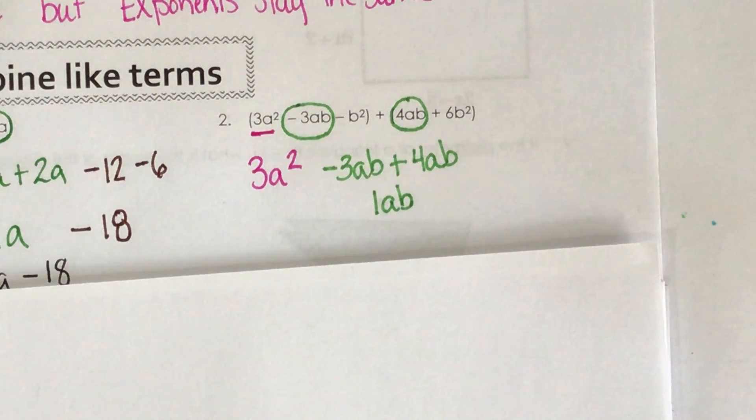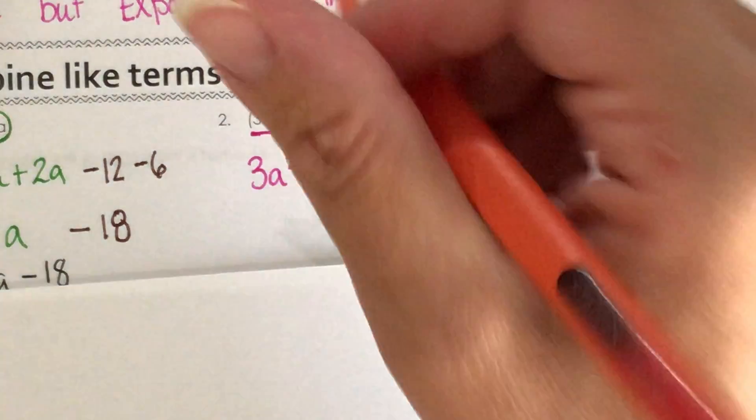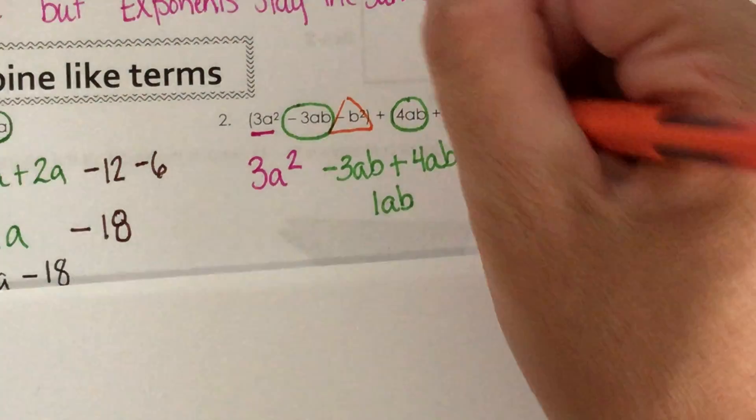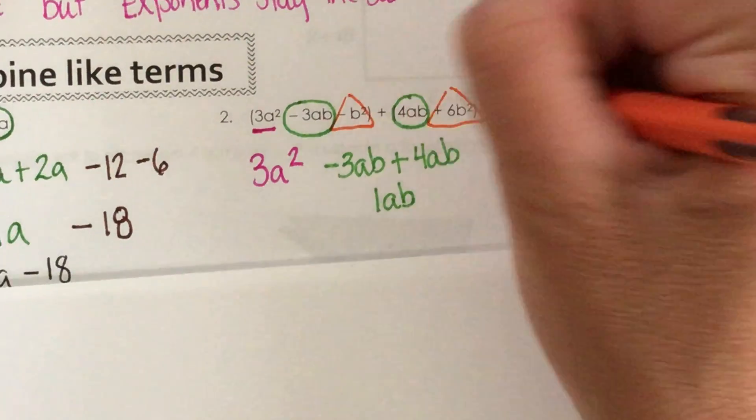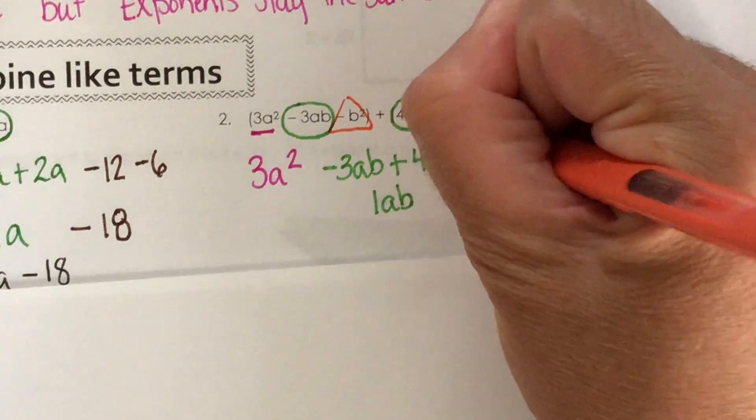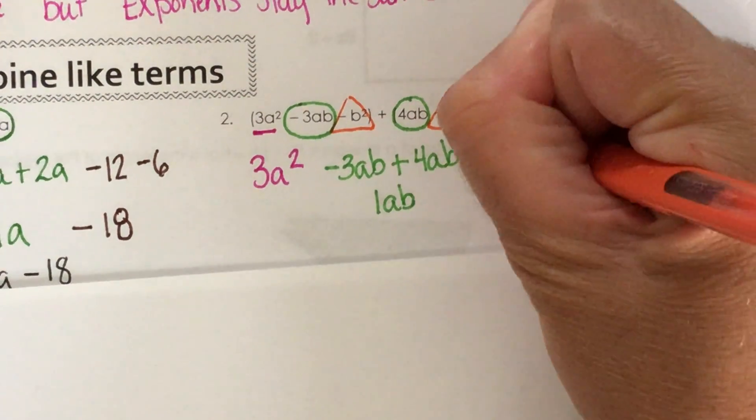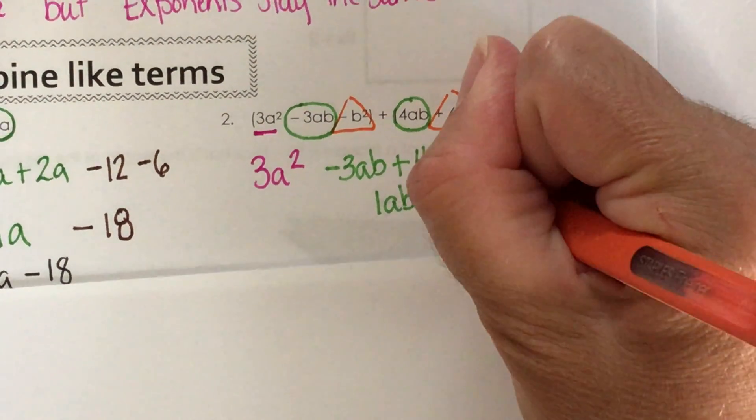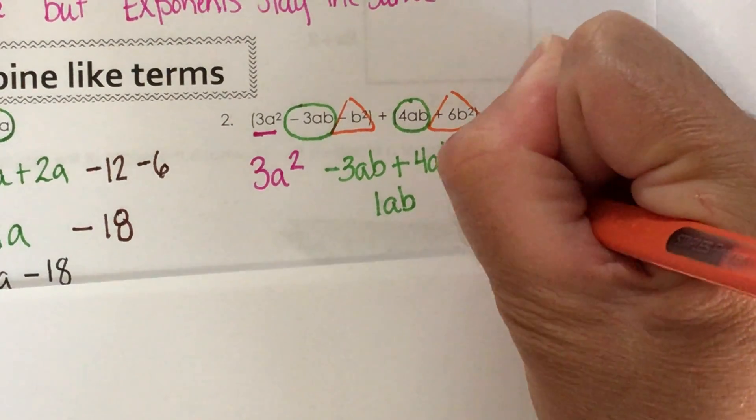So next, I'm going to look at my b squares. So I have a negative b squared and I have a plus 6b squared that I can combine. And so when I put them together, they're going to combine to make a 5b squared.